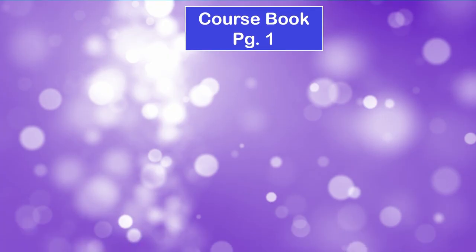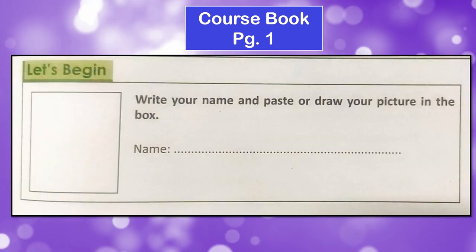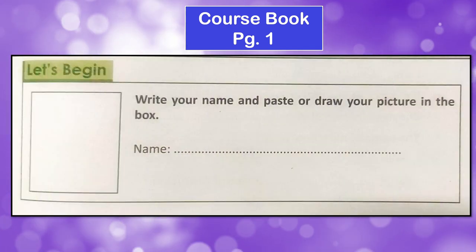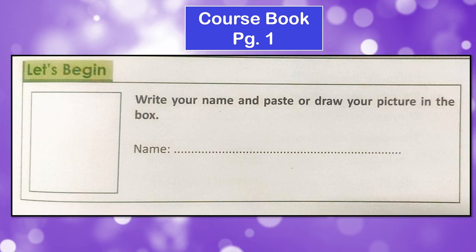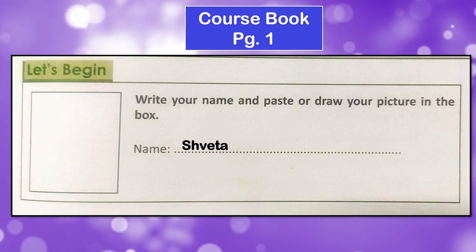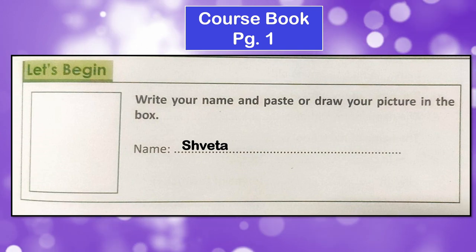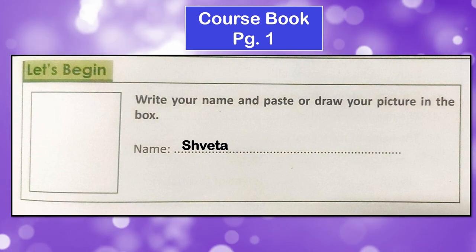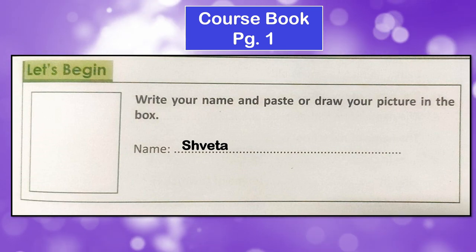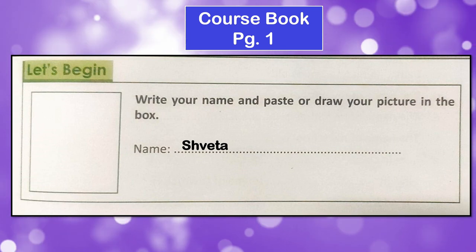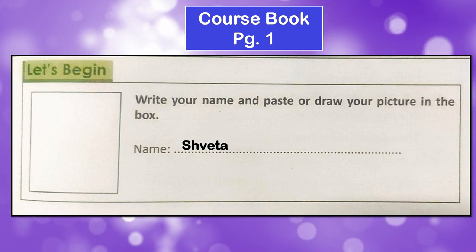Moving on, here in the course book we have an activity. Let's begin. You will all write down your name in the space provided. I am writing my name over here — Shweta. You will write down your name. And in the box, you can either paste your photograph or you can draw your picture. I think the second option will be more interesting, right?